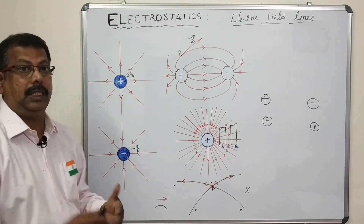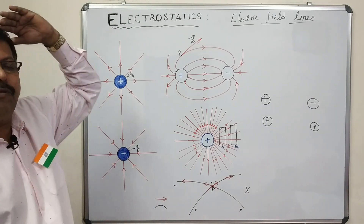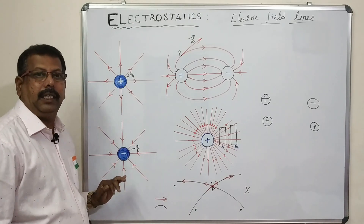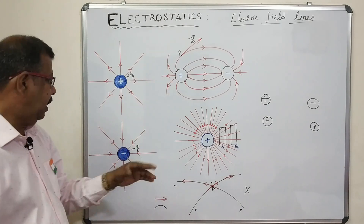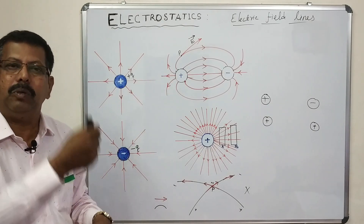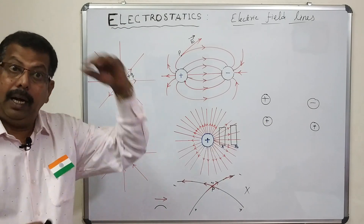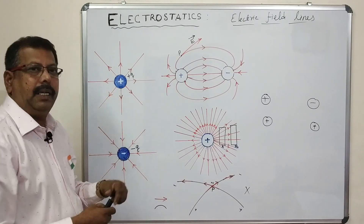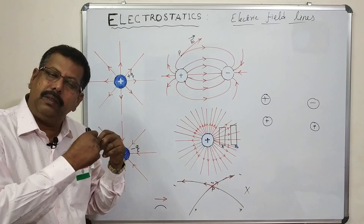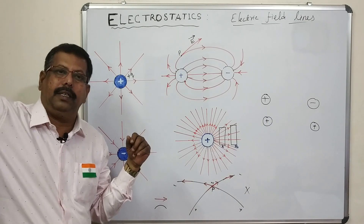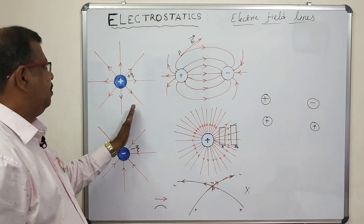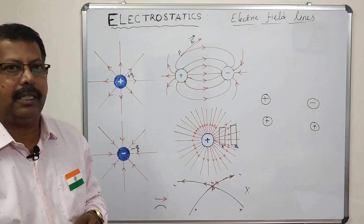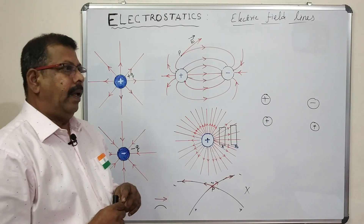For isolated positive charges, the electric field vector at any point in space is tangential to the electric field line at that point.